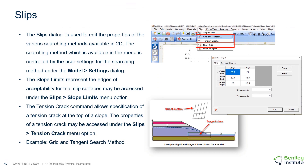The slips dialog is used to edit the properties of the various searching methods available in 2D. The searching method available in the menu is controlled by the user settings for the searching method used under the model settings dialog. Under the same dialog, users can also set the slope limits and tension cracks. For example, if users selected grid and tangent under model settings, then the place to adjust grid and tangent coordinates and extents will be available under the slips dialog.